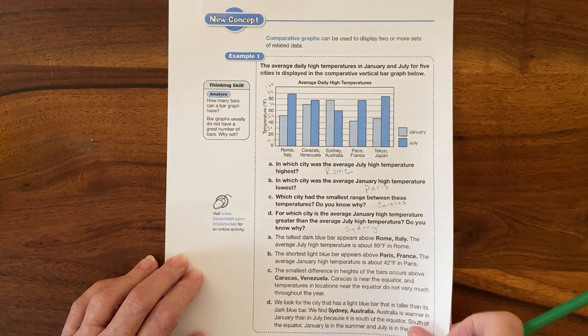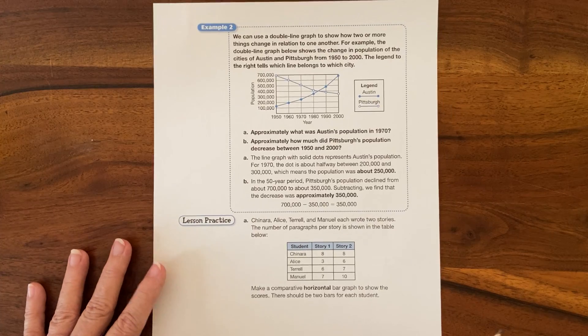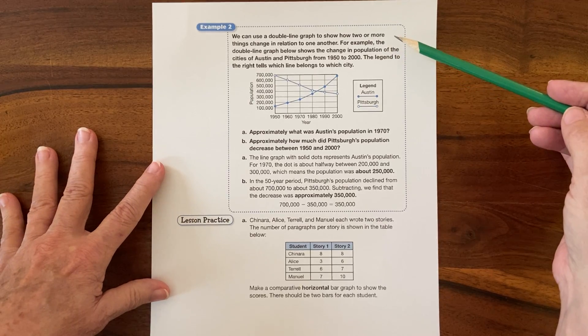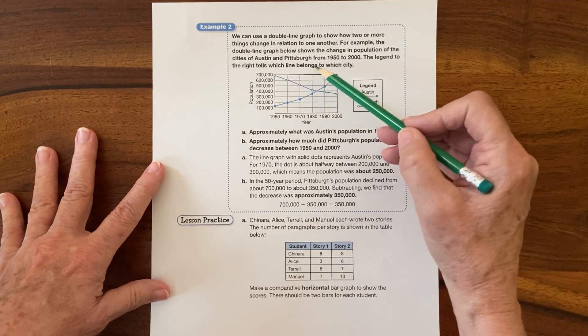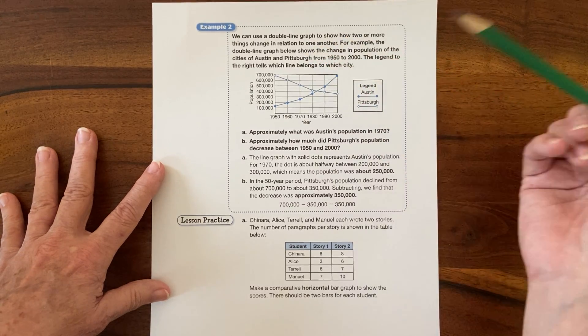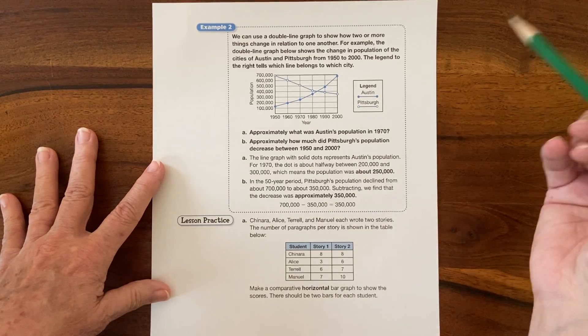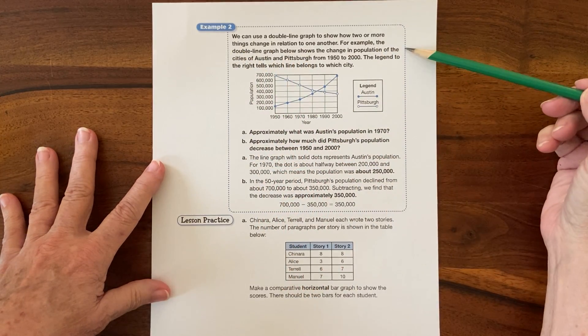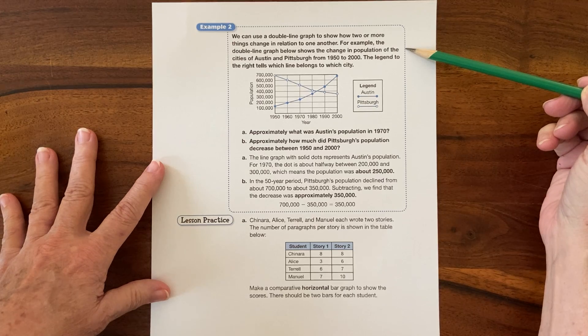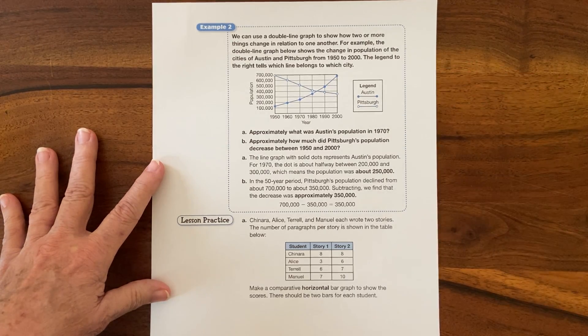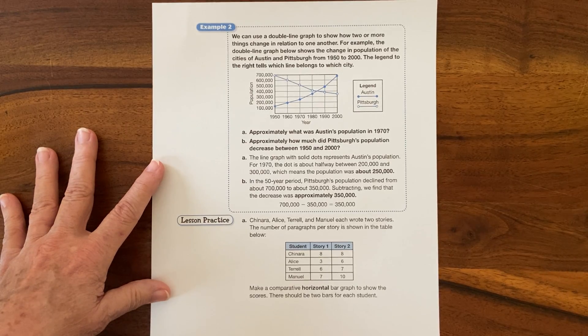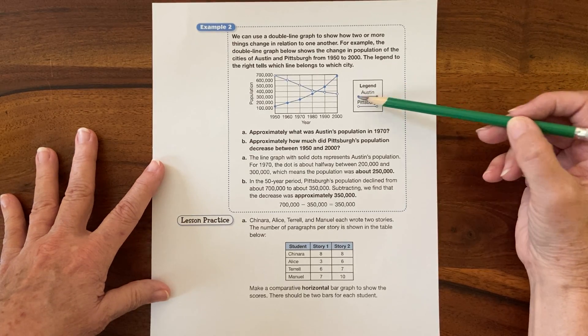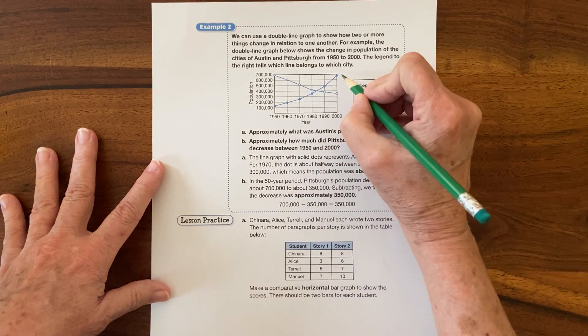Let's look at example two. We can use a double line graph to show how two or more things change in relation to one another. This one doesn't have a title - they left a title off, but they're telling us here in the problem what the title could be. The double line graph below shows the change in population of the cities of Austin and Pittsburgh from 1950 to 2000. So the dark line with the filled in circles is Austin, so this line right here is Austin.